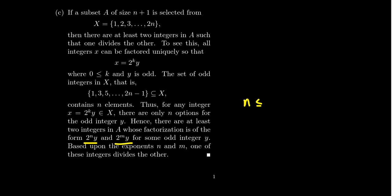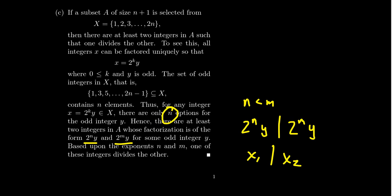If N is less than M, then 2 to the N times Y will divide 2 to the M times Y, which means that the first number X1 must have divided the other one, X2. This is a consequence of the pigeonhole principle — we found N many pigeonholes but had N plus 1 many pigeons, which forces a pigeonhole with two pigeons in it. It's an impressive result that if we take a random subset, there is guaranteed to be some type of divisibility going on.